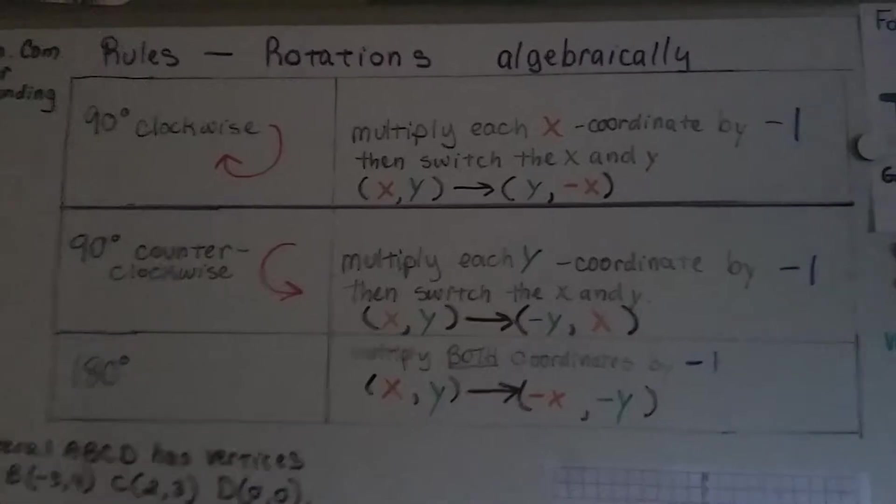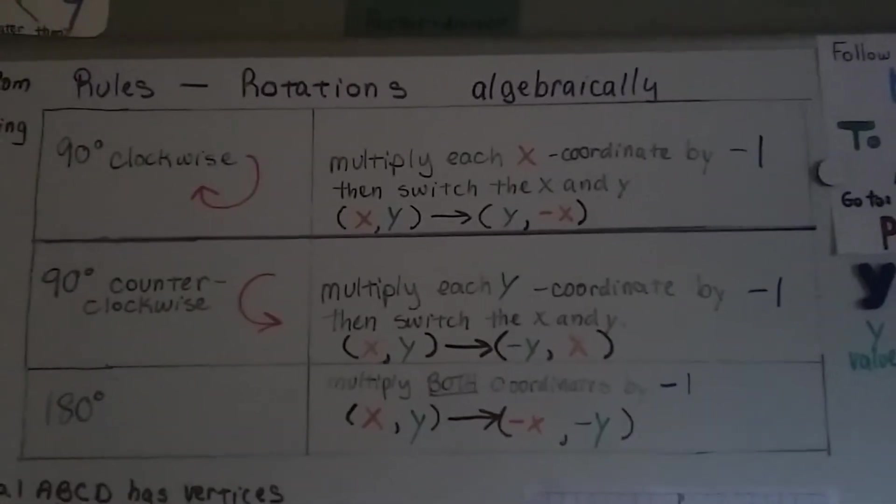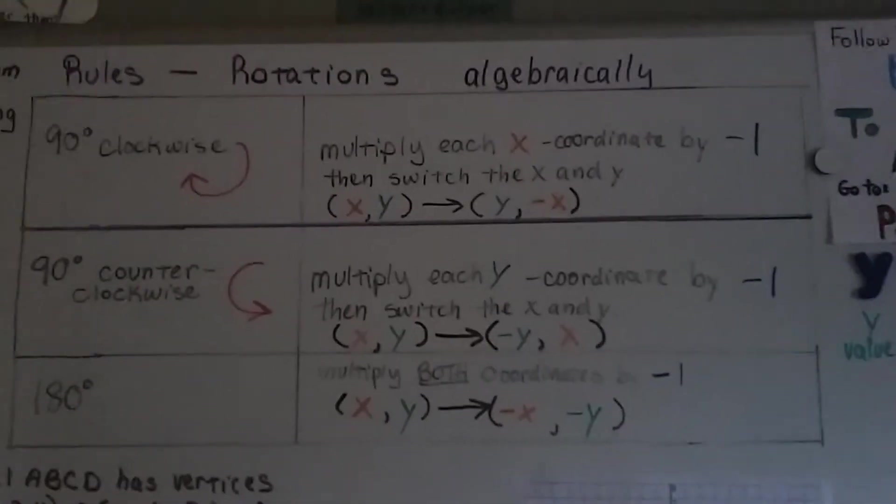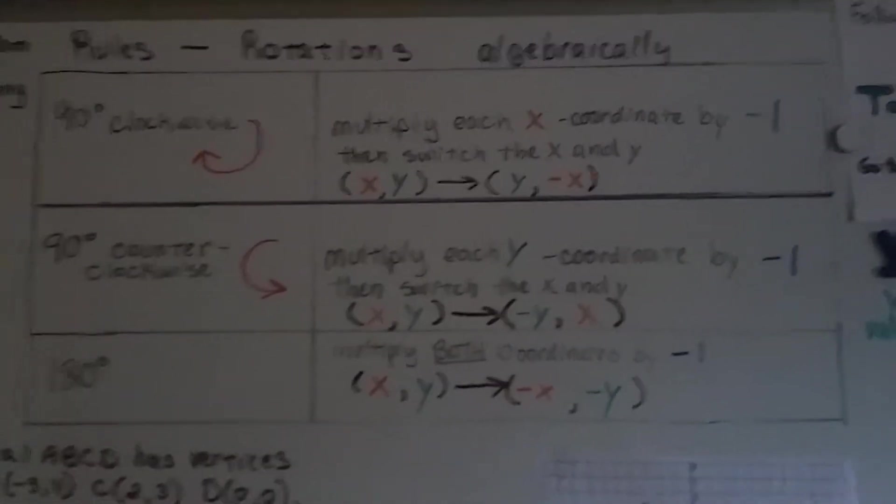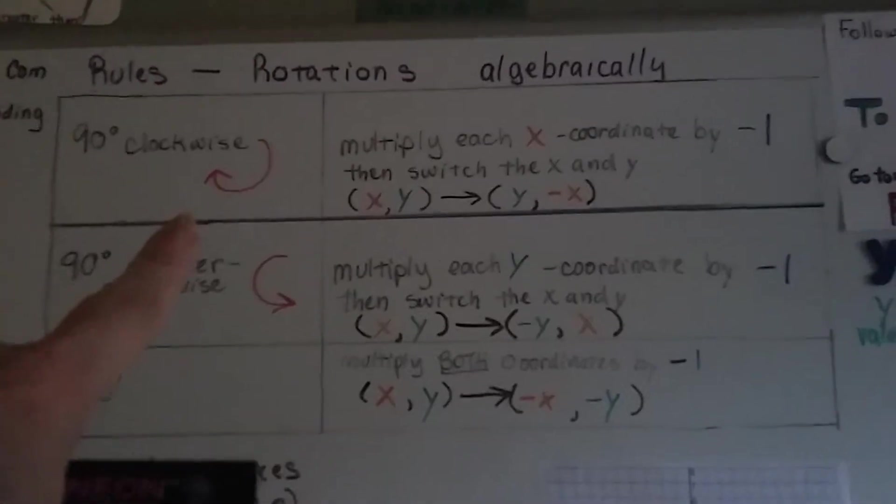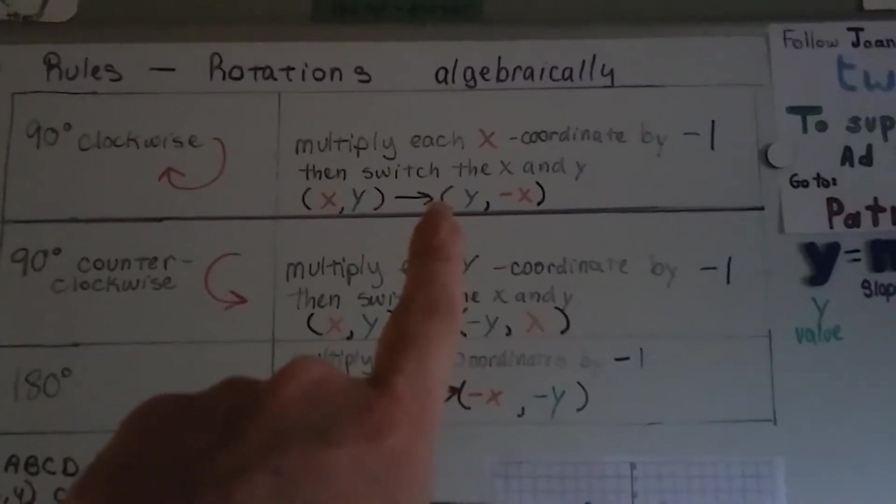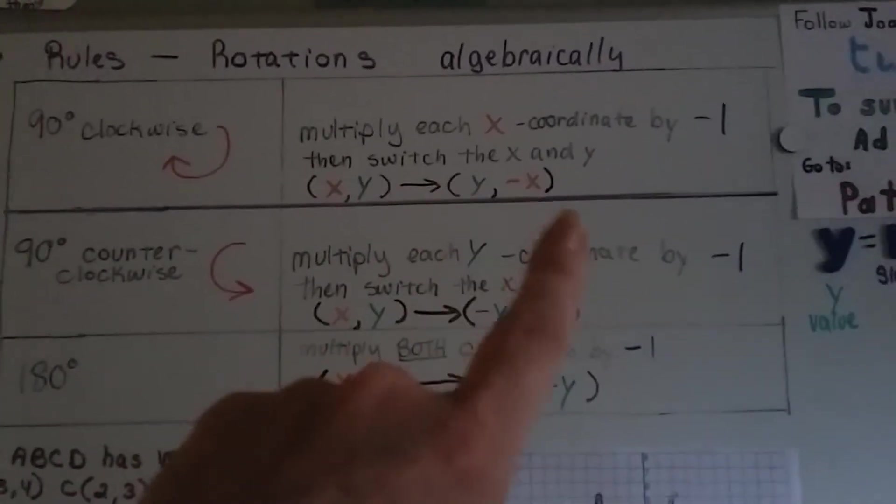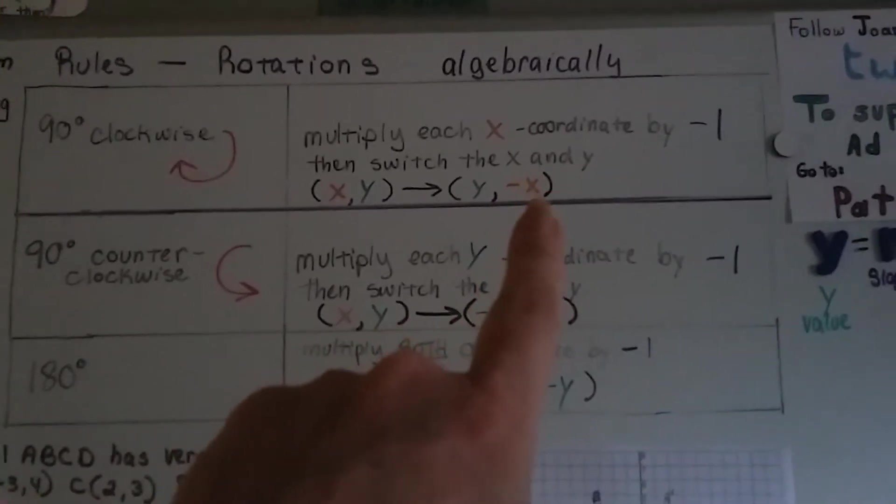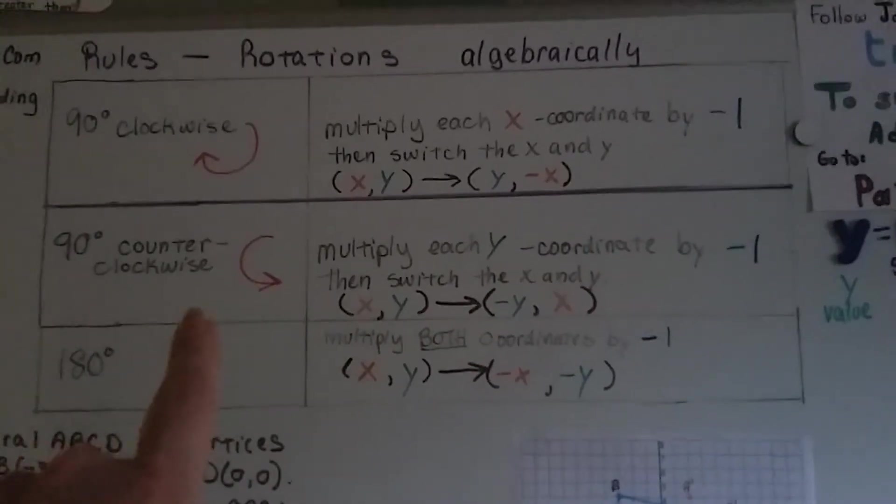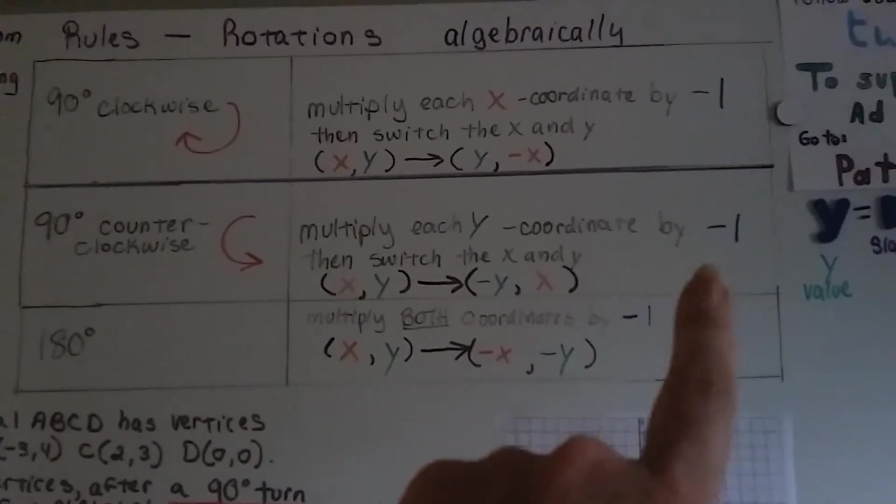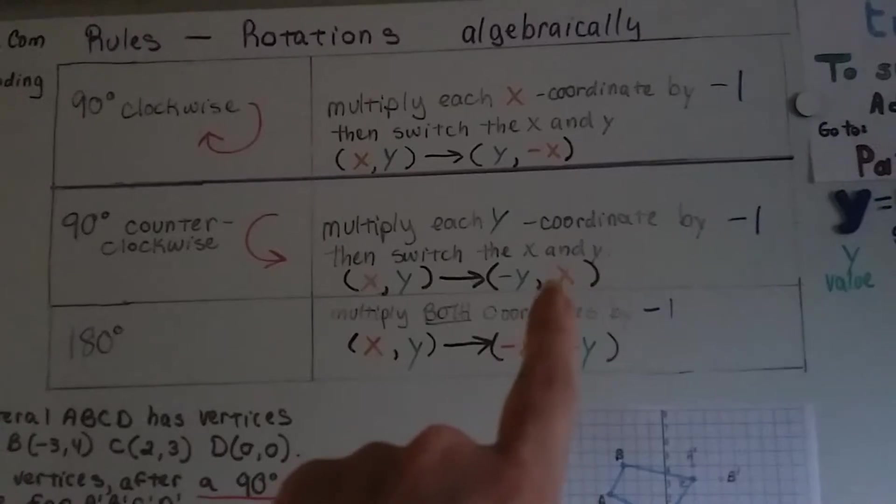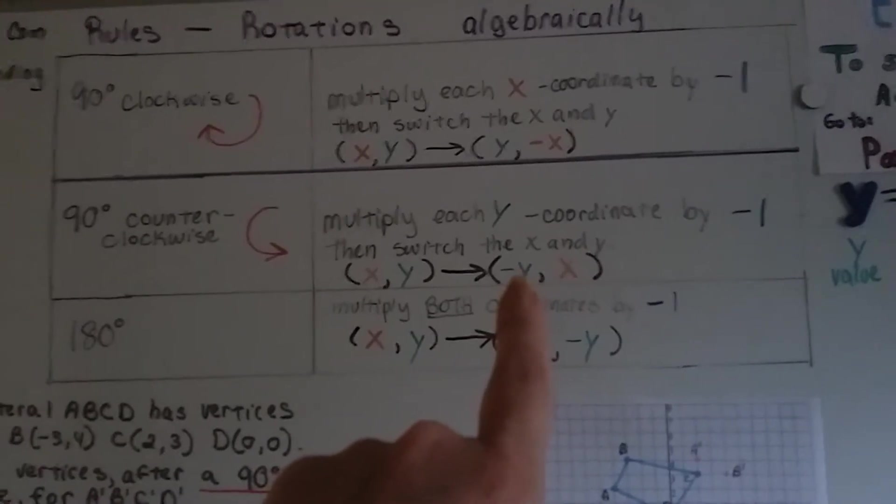So here's our rules for rotation. The rules for rotation algebraically are if it's going to be turned 90 degrees clockwise, we multiply each x-coordinate by negative 1 and switch the x and y values. If we go counterclockwise, we multiply each y-coordinate by negative 1 and switch the x and y values.